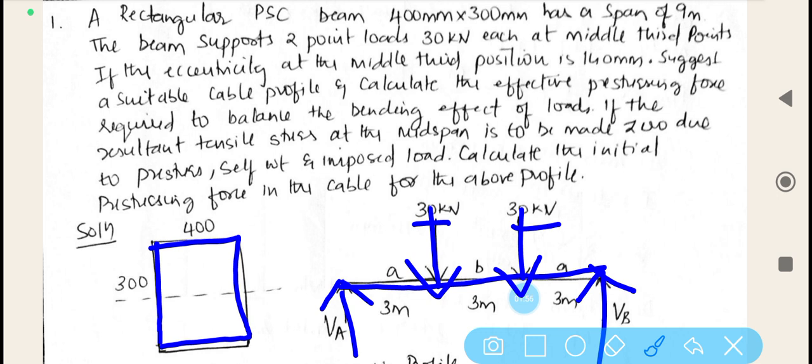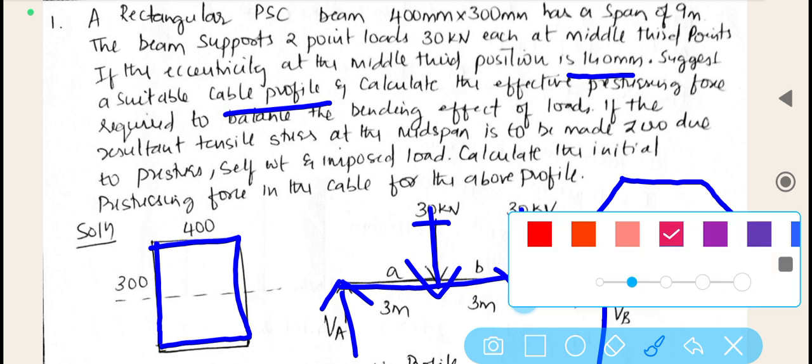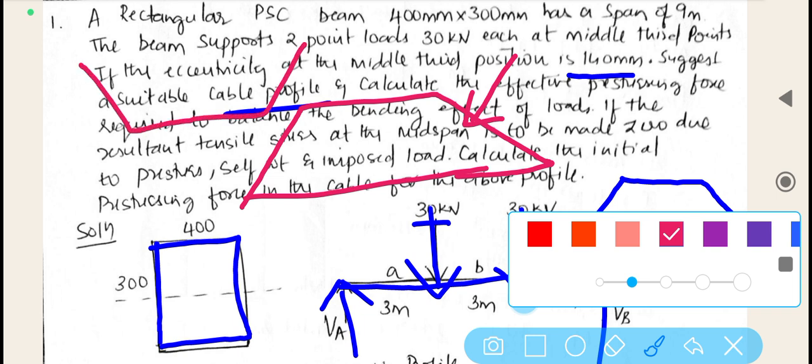If the eccentricity at the middle third position is 140 mm, and the eccentricity is already given, we need to suggest a suitable cable profile. We know that the bending moment profile for a simply supported beam carrying two point loads is in this fashion. This is the bending moment profile, which means we need to suggest the cable profile which is very much similar to the trapezoidal shape.